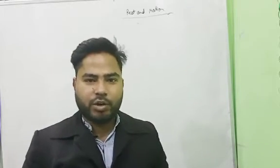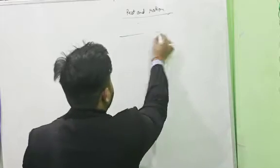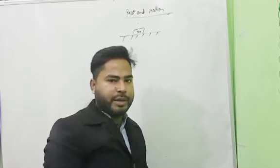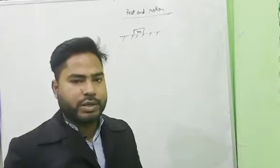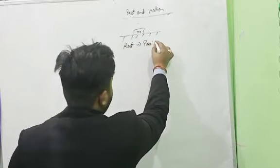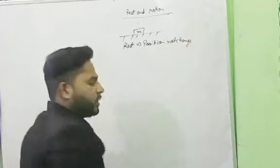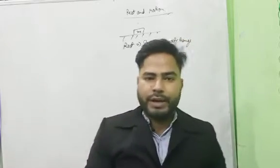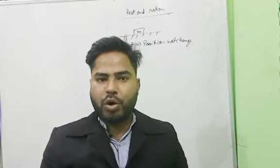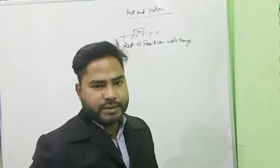Hello everyone, this is Lakshay Sharma and the topic we are starting today is rest and motion. Suppose a book is on the table — what does it mean? It means the book is at rest. Rest means position does not change with respect to time. Examples: a tree on the ground, a book on the table.